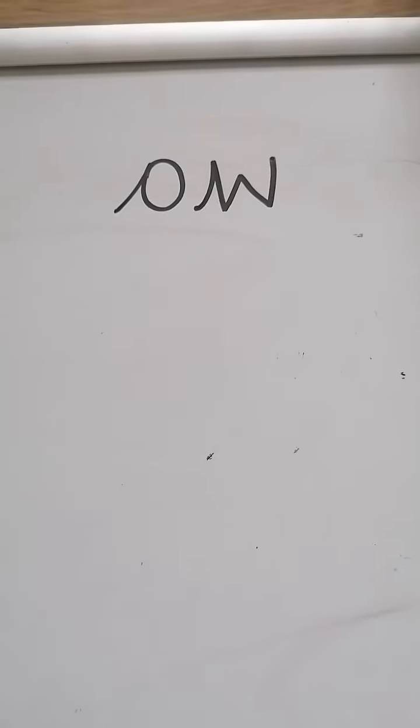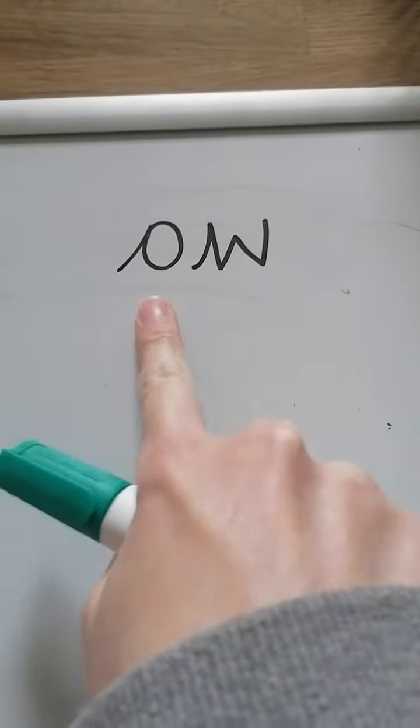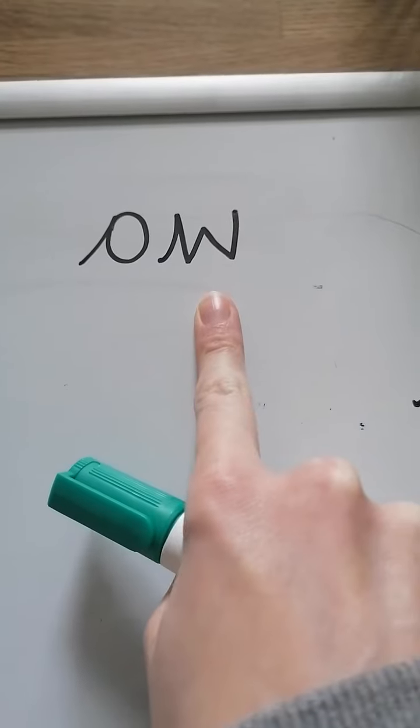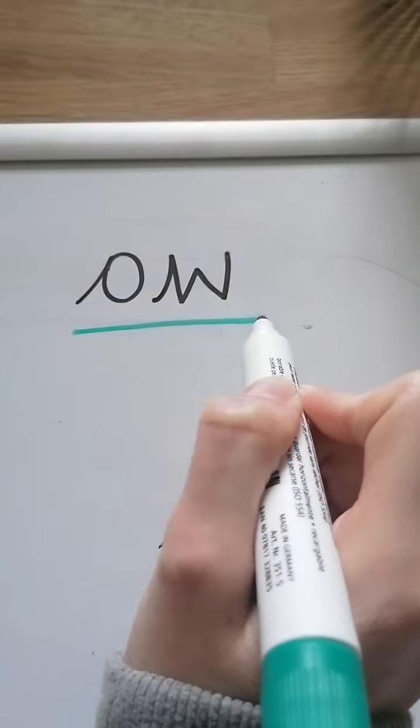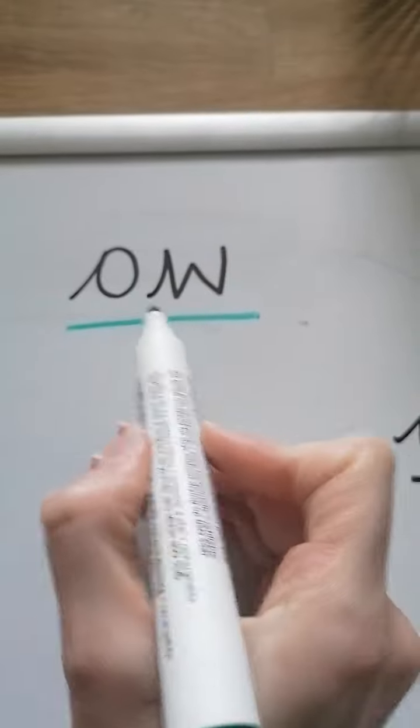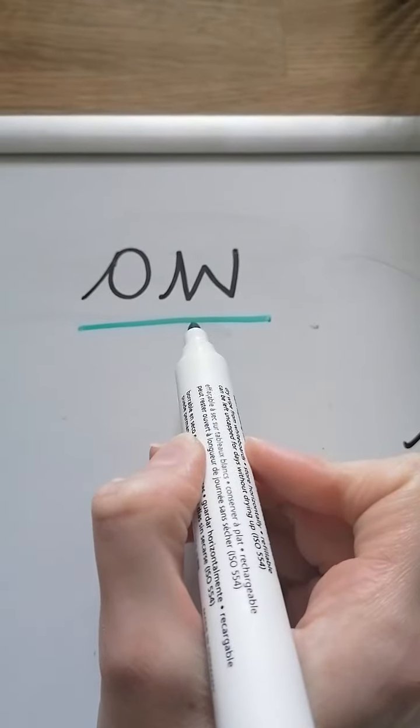Hello! Today in phonics we're going to be looking at this digraph here. Now in reception you learnt it as ow. Now remember, a digraph is two letters that make one sound together.